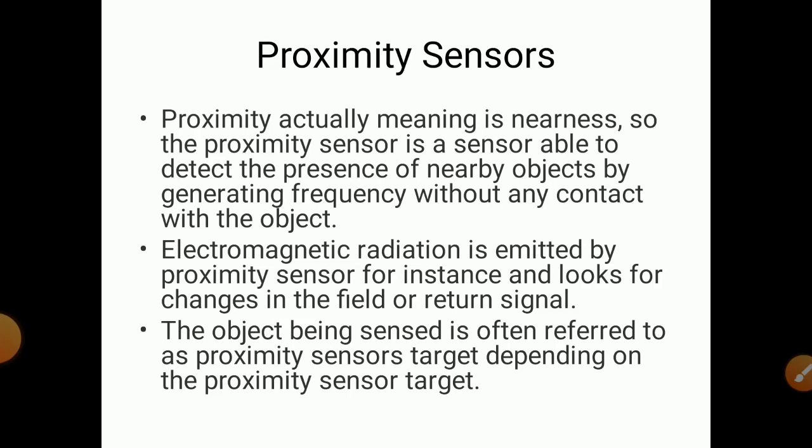Electromagnetic radiation is emitted by the proximity sensor, and it looks for changes in the field or return signal. The object being sensed is often referred to as the target, depending on the proximity sensor type. The distance between the sensor and the target is very important — it should be within the sensing range of that sensor.